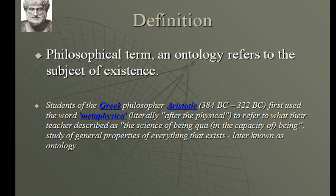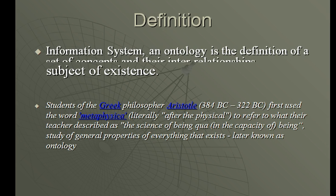Ontology is a philosophical term that refers to the subject of existence. The Greek philosopher Aristotle, during his time, referred to the science of being and the capacity of being. That science studied the general properties of everything that exists. It was later known as ontology.